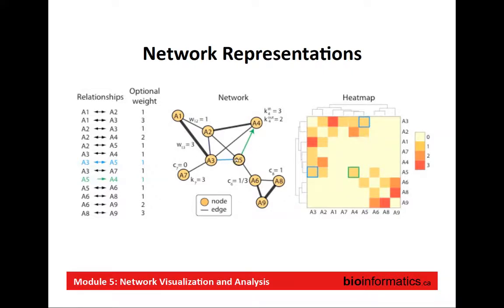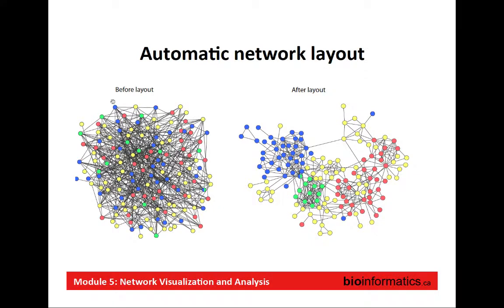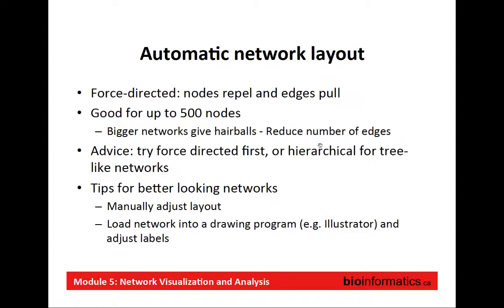If the networks are really strongly connected, or everything is connected to everything else, the node-edge visualization breaks down — you can't see anything once there are too many edges. In that case, a heat map visualization is much better because it uses all the space with no edge crossings. Network visualization is really dependent on automatic network layout algorithms — without them, a network would look like a mess, but once you apply a layout algorithm it looks much nicer and you can see structure.